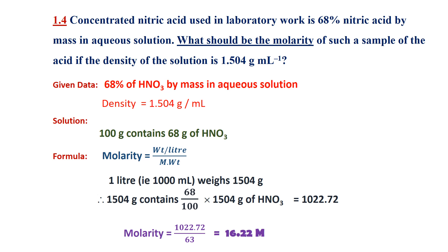By applying the formula, the weight per liter — this much nitric acid is present dissolved in 1 liter — therefore 1022.72 divided by its molecular weight. The molecular weight of nitric acid (HNO3) is equal to 63. Therefore, the answer is: the molarity of the HNO3 solution is 16.22 molar.